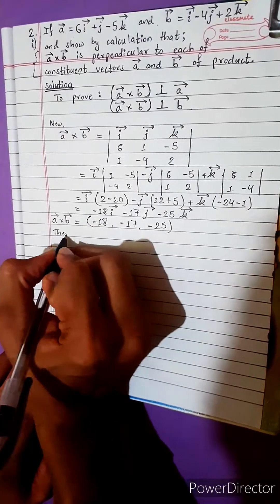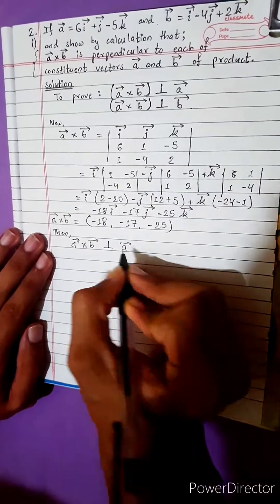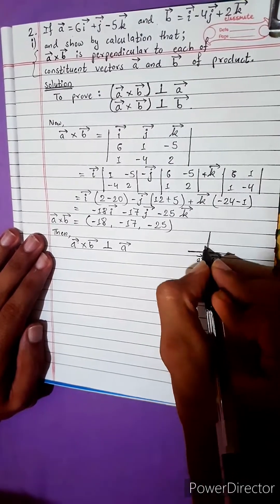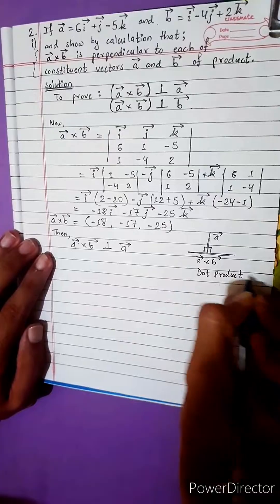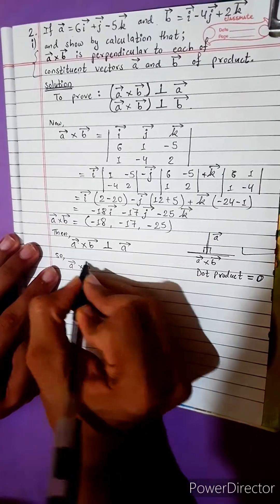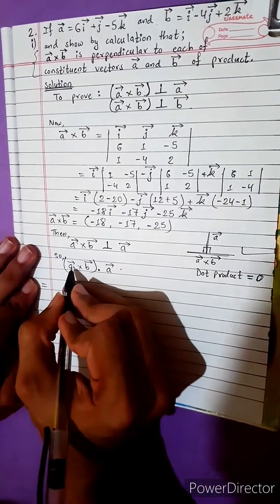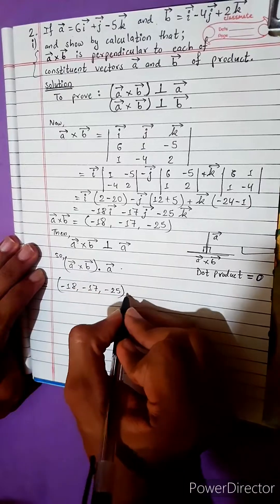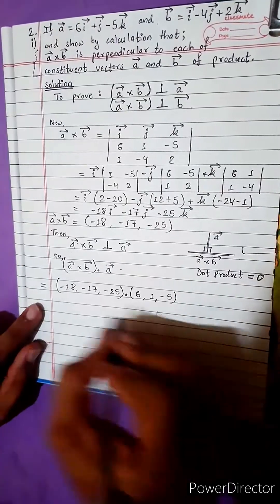Now we will prove it. We need to show that a vector cross product b vector is perpendicular to a vector. Suppose y equals a vector cross product b vector. To prove it is perpendicular to a vector, the dot product must equal zero. So, a vector cross product b vector dot product with a vector equals 0. Here we have (-18, -17, -25) dot a vector, where a vector equals (6, 1, -5).